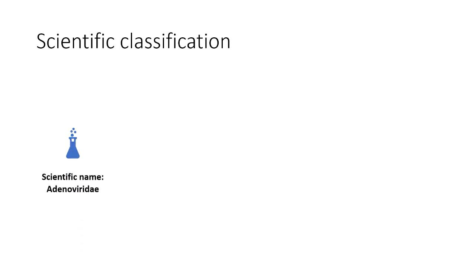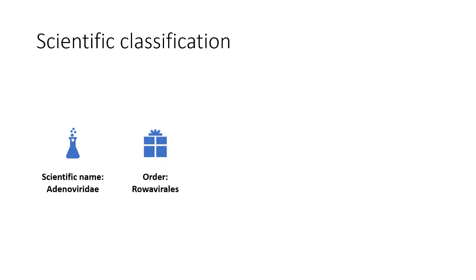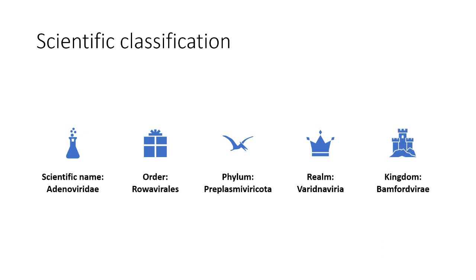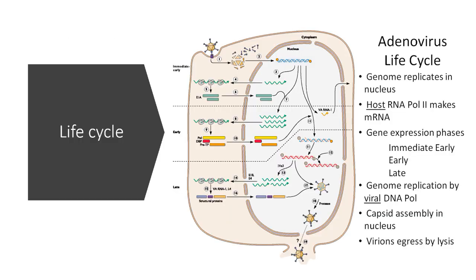The scientific classification of the virus: the scientific name is Adenoviridae, the order is Rowavirales, the phylum is Preplasmiviricota, and the kingdom is Bamfordviria. It's important to remember particularly the scientific name Adenoviridae and the order Rowavirales.